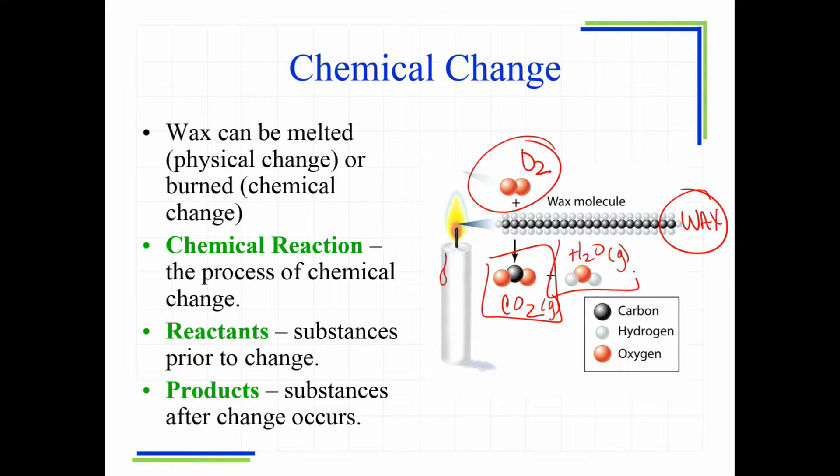The products are what happens after the chemical reaction. So these are my products, the carbon dioxide and the water. So when you see a chemical reaction and talk about a chemical change, there's always these two components. Reactants, what you started with. The products, what forms after the change has occurred.